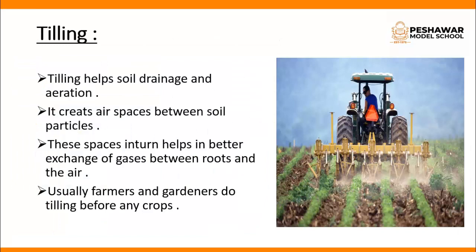The next topic in our matric book is tilling. You can see a tractor here. Tilling helps soil drainage and aeration — it creates air spaces between soil particles, which in turn helps in better exchange of gases between roots and the air. Farmers and gardeners do tilling before any crop to make the soil soft and make it easy for seeds to exchange air with the environment.